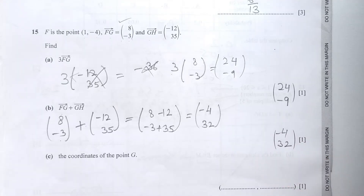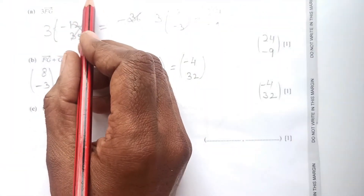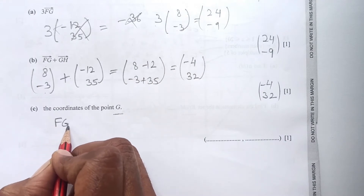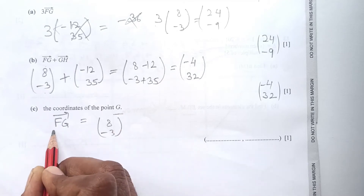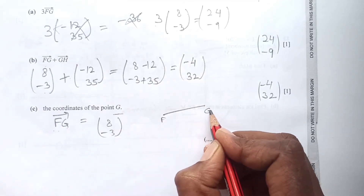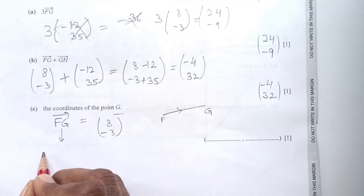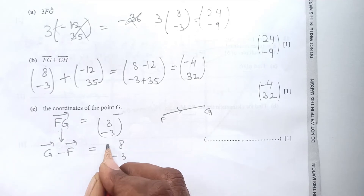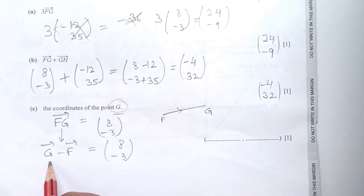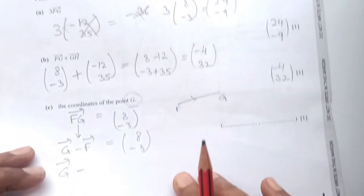Now find the coordinate of point G. We are given vector FG = (8, -3). The vector FG represents the distance from F to G, so FG = vector G minus vector F. We can write this as G minus F = (8, -3). We are looking for G, and F is the point (1, -4), written in vector notation as (1, -4).